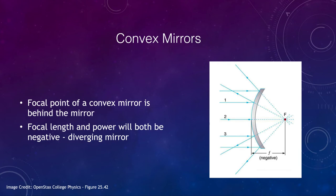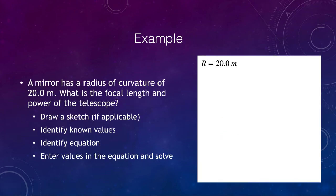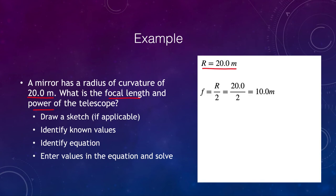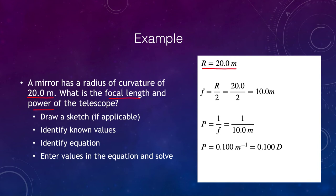Let's look at an example of calculating these values for a mirror. Say we have a mirror with a radius of curvature of 20 meters and we want to find the focal length and the power. With R = 20 meters, the focal length is half of that, or 10 meters. The power is then 1 over the focal length: 1 over 10 meters equals 0.1 diopters. Diopters are the optical measure of power, and we can do these quick calculations for any convex or concave mirror.